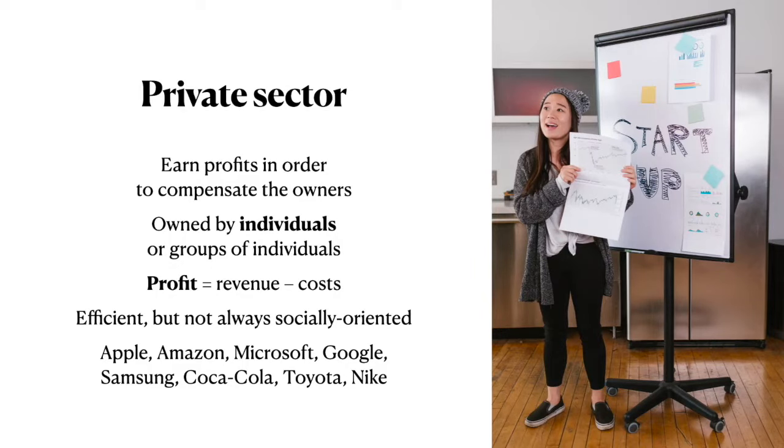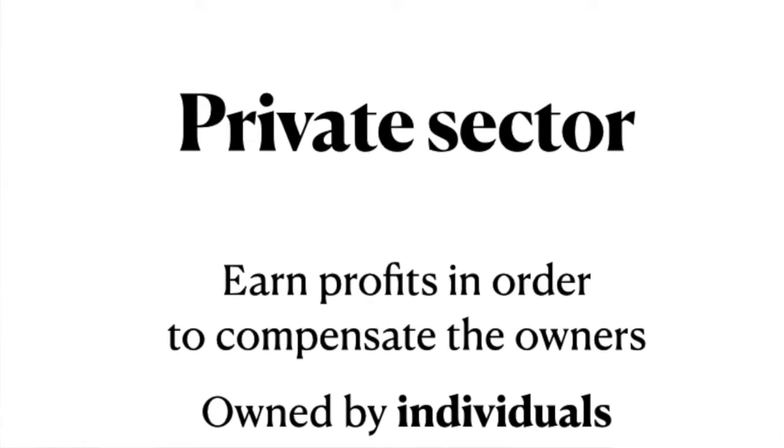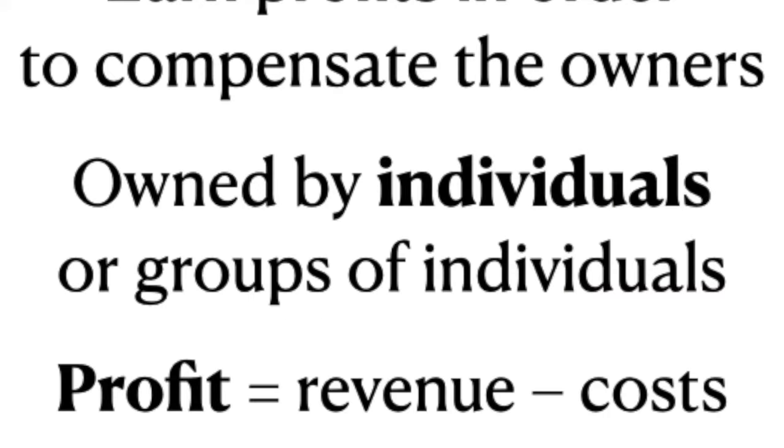The next item on our list is private sector. Private sector organizations are quite the opposite of public sector — they earn profits in order to compensate their owners. For public sector organizations we say surplus; for private sector organizations we say profit. Even though from a mathematical perspective it's exactly the same thing — the positive difference between revenues and costs. Private sector organizations are owned by individuals or groups of individuals.